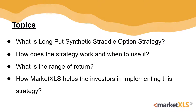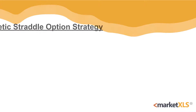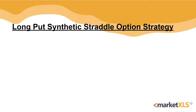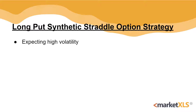So without any further ado, let's start with the topic. A Long Put Synthetic Straddle is used when the trader believes the underlying asset will move significantly higher or lower over the life of the options contracts. It is a strategy used by traders when they are expecting a high volatility period of the underlying asset.